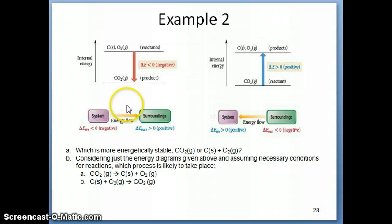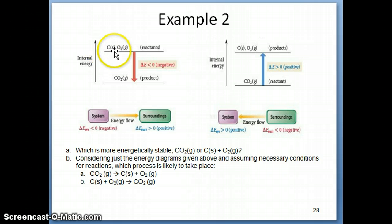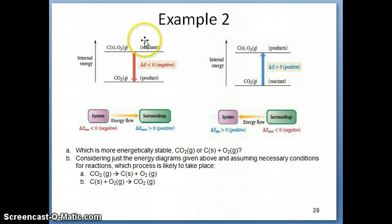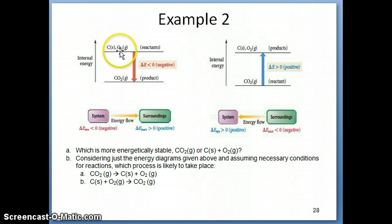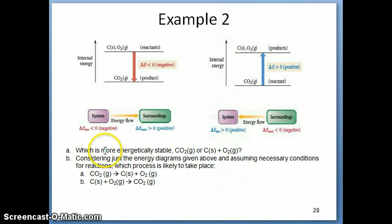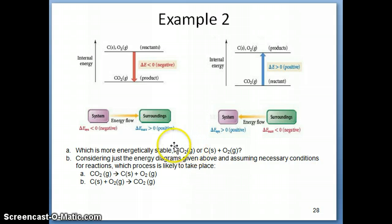Example two presents an energy diagram for solid carbon plus oxygen gas on one energy level and CO2 (carbon dioxide) on another. On the left is the formation of carbon dioxide from solid carbon combining with oxygen gas. On the right is a reaction where carbon dioxide decomposes to form solid carbon and oxygen gas. The first question asks: given this energy diagram, which species is more energetically stable — CO2, or solid carbon and oxygen gas?